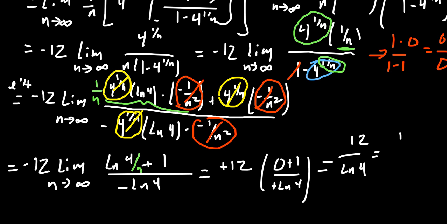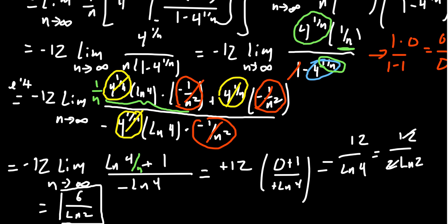By properties of the natural log, ln(4) equals 2 times ln(2), and 2 goes into 12 six times, so the area under the curve from 1 to 3 of 2 to the x is 6 over ln(2). That was a really long problem involving the limit of Riemann sums, the geometric series formula for sigma sums, and L'Hôpital's rule — a very involved calculation.